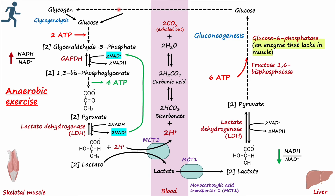Once glucose is formed in the liver, it is transported through circulation back to skeletal muscle, where it is either stored as glycogen or used directly to synthesize energy through glycolysis. Importantly, skeletal muscle lacks the glucose-6-phosphatase enzyme, which is why lactate cannot be recycled into glucose in the muscle itself. This is the very reason lactate must travel to the liver to be recycled into glucose before being transported back to the muscle.